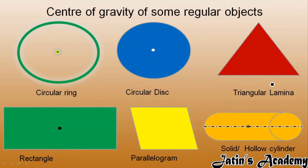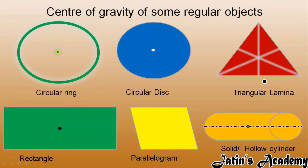Next, an important one: triangular lamina. A triangular lamina has its center of gravity at the point of intersection of its medians. A median is the line from the midpoint of a base to the opposite vertex. The intersection of these three medians gives us the center of gravity.